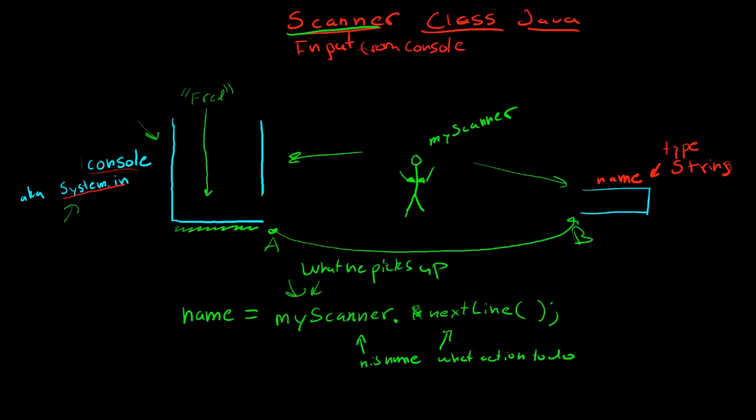And basically what this does is, telling him to get the next line tells him to come over here and pick up whatever's right here. Once Fred drops down, it'll be Fred. And then he comes over, picks it up. So now he has Fred. And then he takes it over here and sticks it inside of here. And now you have this stored in a string, saved in a variable. Now you can do whatever you want with it.